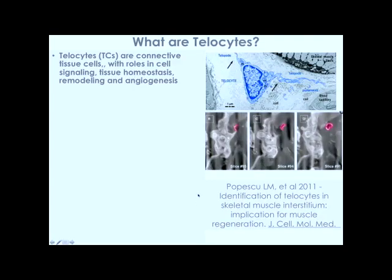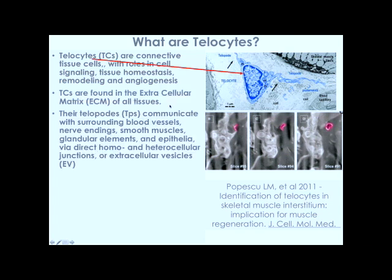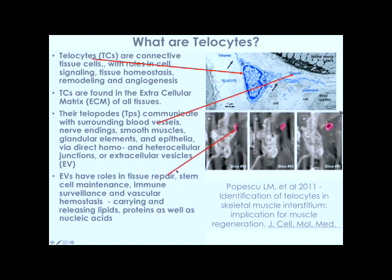What are telocytes? Connective tissue cells that are involved in homeostasis, found everywhere in the body, in the connective tissue. They communicate with surrounding blood vessels, nerve endings, smooth muscles, everywhere, and have roles in tissue repair, as it says there.